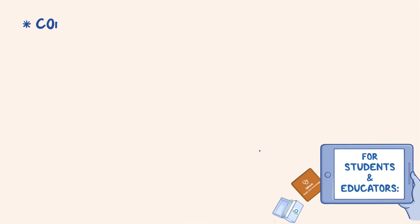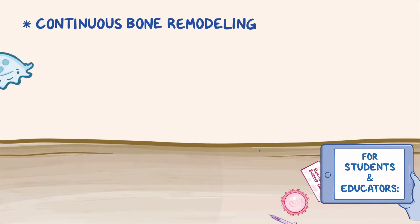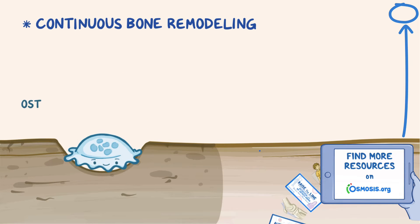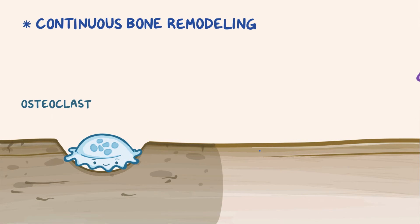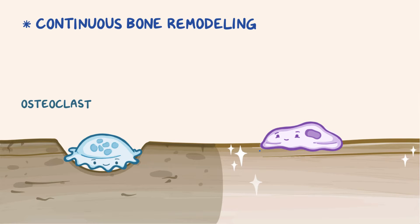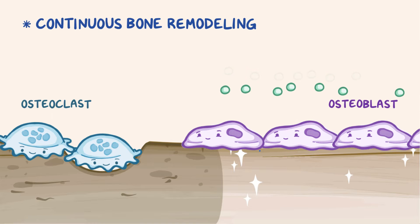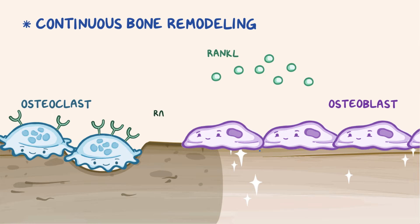Normally, bones undergo a continuous process of remodeling. Old brittle bone tissue gets reabsorbed by multinucleated bone cells called osteoclasts, which have 5-20 nuclei per cell. The resorbed bone tissue gets replaced by a new one made by another type of bone cell called an osteoblast. At the cellular level, the process begins when osteoblasts release receptor activator of nuclear factor kappa-beta ligand, or RANK-L for short, which is a substance that binds to RANK receptors on the surface of an osteoclast.